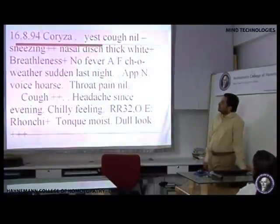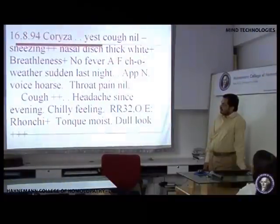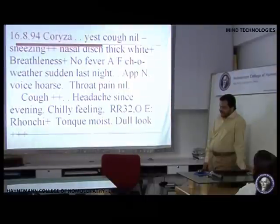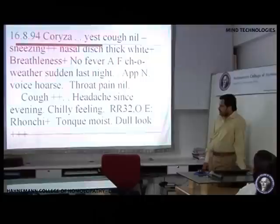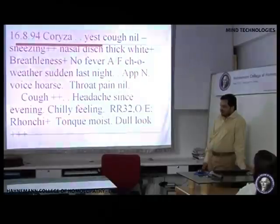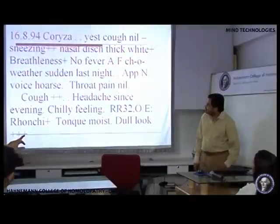This is a case from 1994. She started with coryza yesterday, which led to sneezing and thick white nasal discharge. She started becoming breathless with no fever. There was a change of weather last night, which could be a reason, along with the tapering of the steroid dose. Her appetite is normal. She has a little hoarse voice, a cough, and a headache since evening. She is feeling chilly. The respiratory rate is already 32 and she has ronchi now, which were not present on the previous three days.